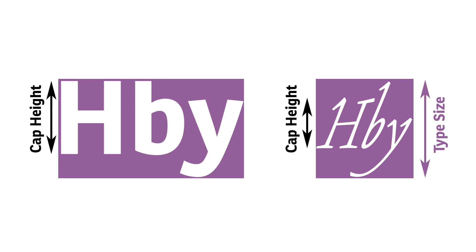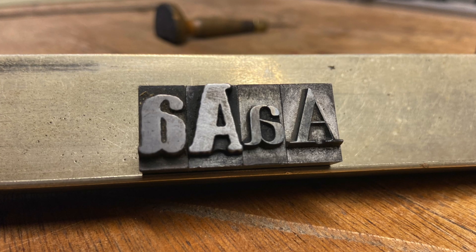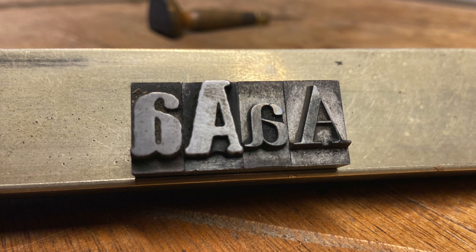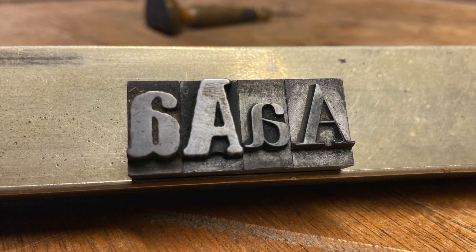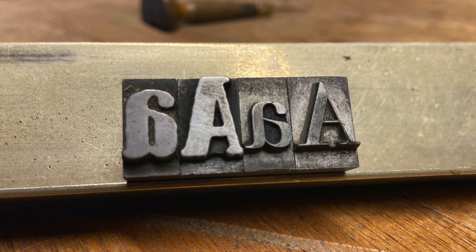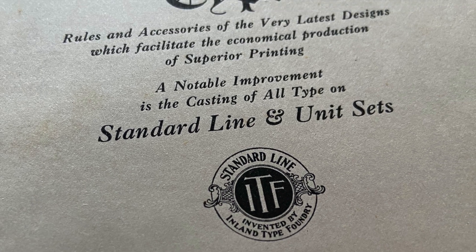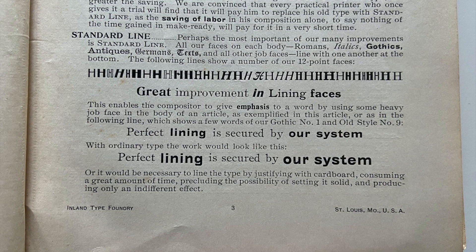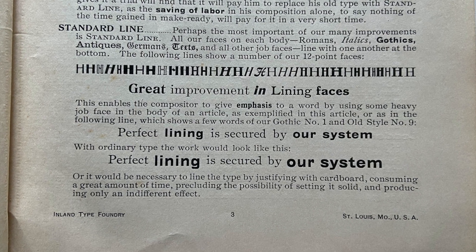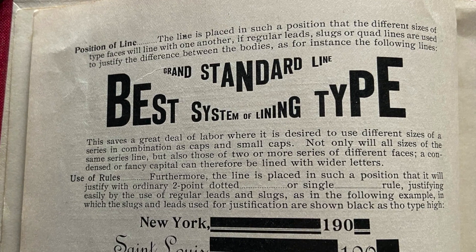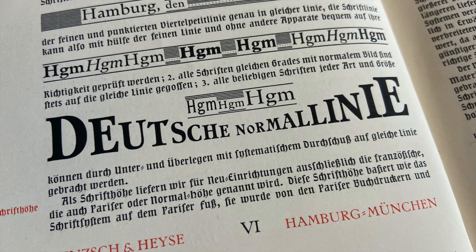All of that is mostly invisible to the readers of the printed documents. But this positioning can cause problems for the typesetter when different fonts were supposed to be used together in a single line — the baselines often wouldn't match. To alleviate this, some type foundries started to use a standard baseline for all their fonts and a systematic positioning system. This made the job of typesetters much easier, but it meant that type designers had to make compromises and force their designs into those systems.